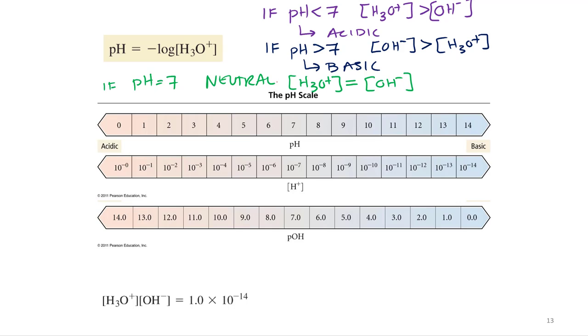Not as common of a scale, but it could tell you all the information you need to know is the pOH. So if pH is the negative log of hydronium or H+, what do you think pOH is? Negative log of hydroxide.